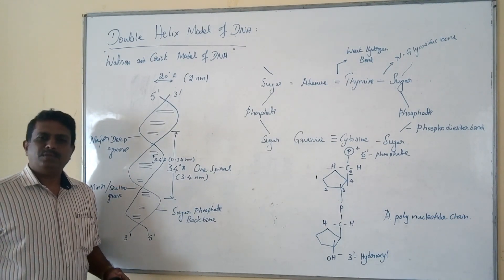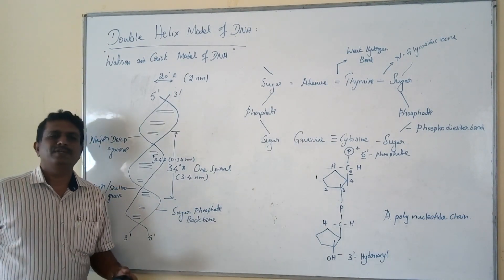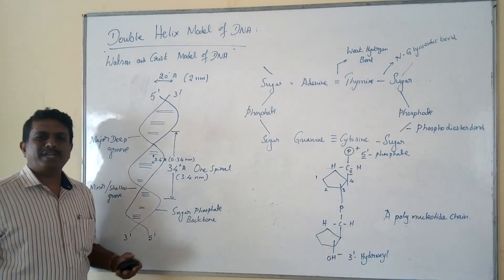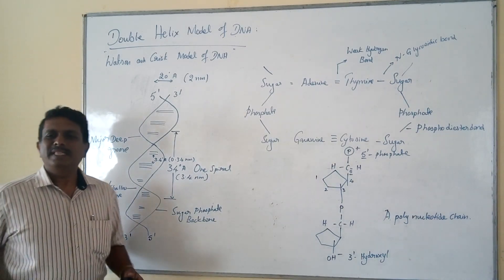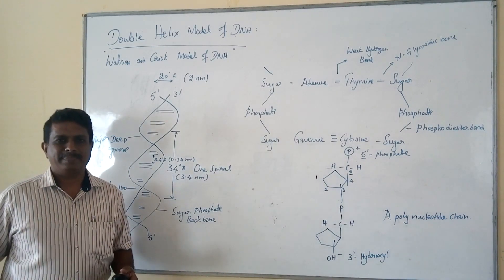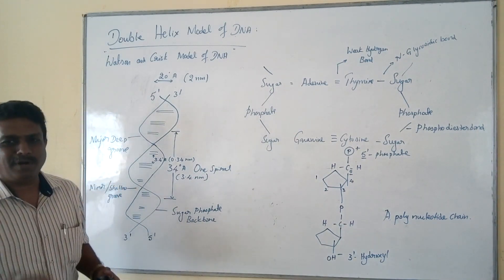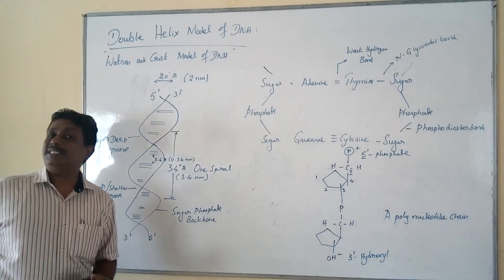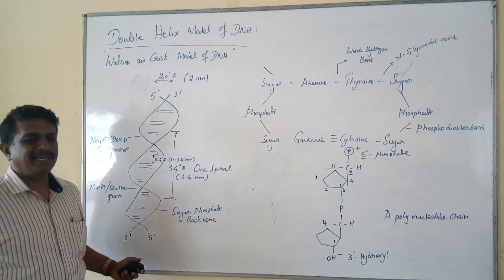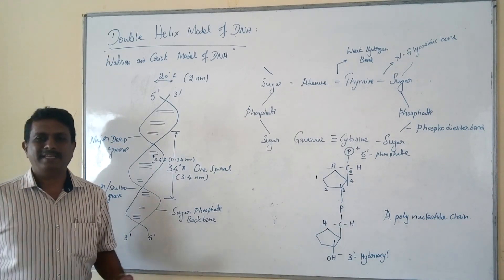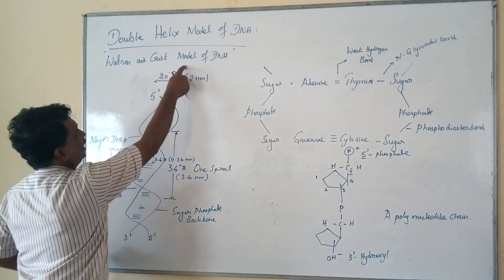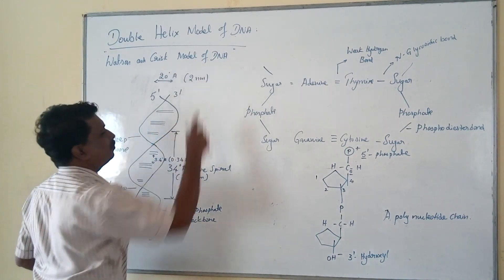Hello students, today we shall discuss the main important salient features of the double helix model of DNA. The double helical model of DNA was discovered by Watson and Crick, and it is also designated as the Watson and Crick model of DNA.